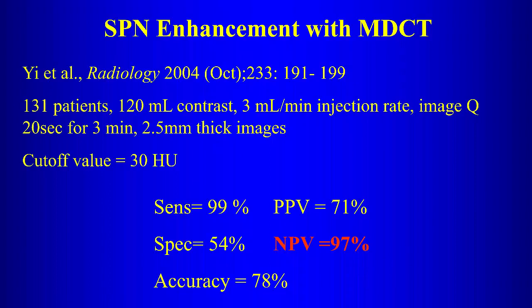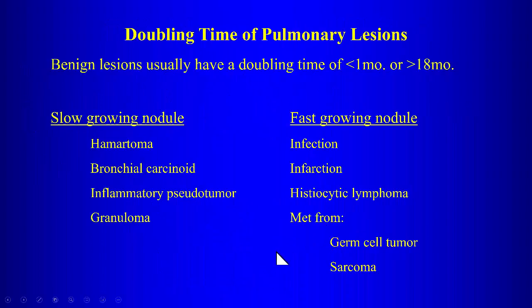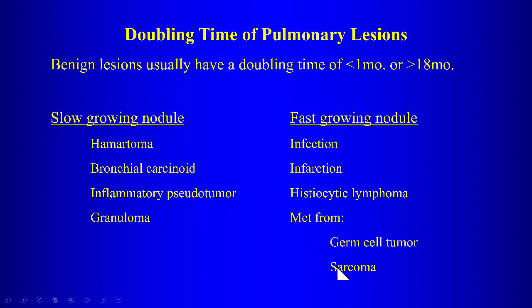Benign lesions usually have a doubling time of less than one month or greater than 18 months. Slow-growing nodules include hamartomas, carcinoids, inflammatory pseudotumors, and granulomas. Fast-growing lesions include infection, infarction, lymphoma, and metastatic disease from germ cell tumor or sarcoma — those can have very short doubling times, with dramatic growth seen on follow-up CT in just three weeks.